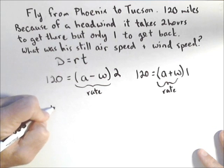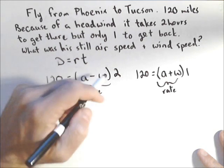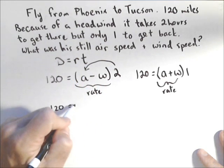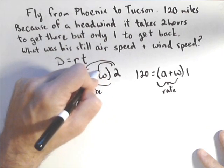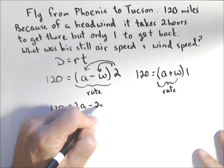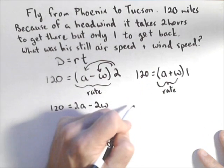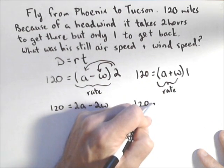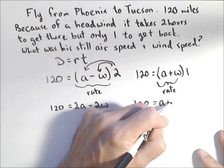So we have two equations. We have 120 equals, let's distribute this two, 2A minus 2W. And here, it's just one time, so we have 120 equals A plus W.